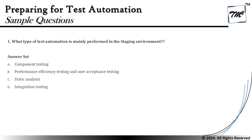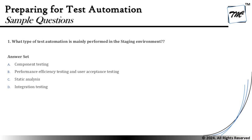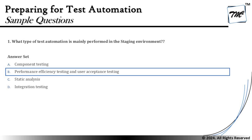Integration testing is certainly performed when components are available in the development environment — we are not waiting for a pre-production environment to exist to perform it. The initial levels of tests like component and integration each have a dedicated environment. Given our understanding of what gets conducted in which environment, we should stick to that. The right answer to this question is B — performance efficiency testing and user acceptance testing are mainly performed in the staging environment.